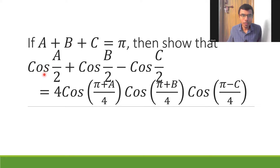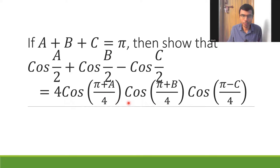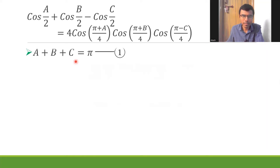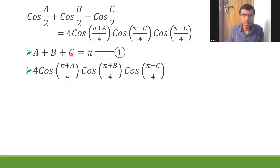Hello learners, now let us see how to show that cos(A/2) + cos(B/2) - cos(C/2) equals the given expression, if A + B + C = π. My sincere suggestion: please start from the RHS — it's kind of easy for this sort of question. So I'm going to take my RHS. The question is presented at the top of each slide so you can refer to it at any point.